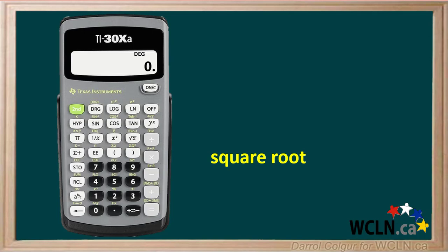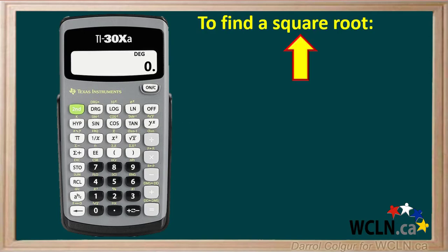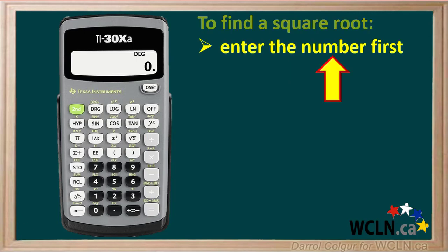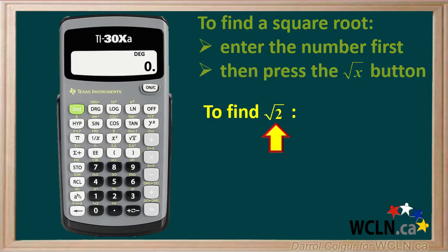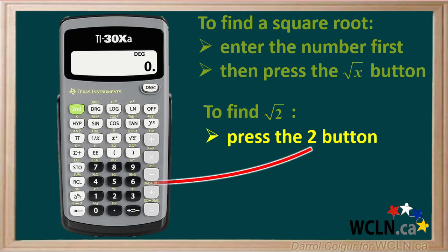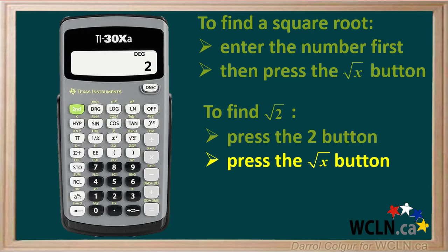The square root button on this calculator is right here. To find the square root of a number with this calculator, you must enter the number first, then press the square root of x button. For example, let's say you want to find the square root of 2. Enter 2 by clicking the 2 button and 2 is displayed on the screen. Next, press the square root of x button and the square root of 2 to 9 decimal places is displayed.